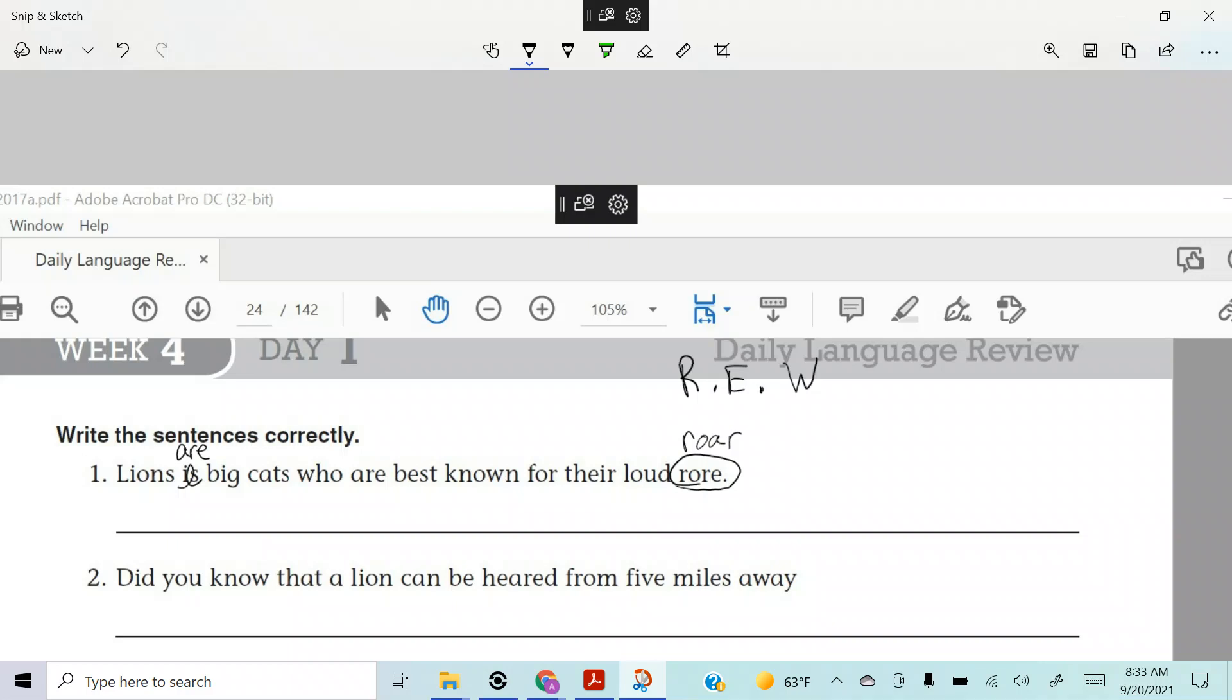Lions are big cats who are best known for their loud roar. I think that's it. Is there anything else? I don't see anything else. Everything looks good to me. All right, so now we've read. How many times did I read that? At least five, right?